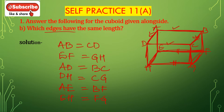These edges have the same length: A, B, C, D, E, F, G, H. E, F and G, H have the same length. A, D and B, C have the same length. Then D, H and C, G have the same length.